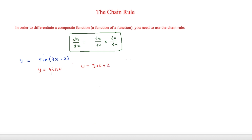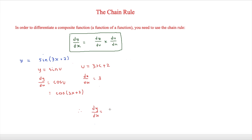The first thing we have to identify is what y and u are. So dy over du — using differentiation of trigonometric functions — is cos(u), which we can write as cos(3x plus 2). And du over dx is simply 3. Therefore, dy over dx equals 3 cos(3x plus 2). That is our final answer for that question.